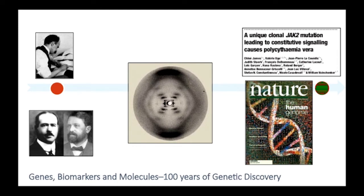This is also in line with genetic discovery in general. Around the turn of the century, Boveri described the term 'gene' — the packet of genetic information — around the same time Osler was describing PV. By the middle of the century, we have the discovery of DNA, and this is Rosalind Franklin's X-ray crystallography of the DNA structure. And then in 2001, the human genome was reported in Nature — the full resequencing of our genome. So our disease, polycythemia vera, went from clinical description to genetic underpinning in the same time span as the whole idea of genes and resequencing of the human genome.